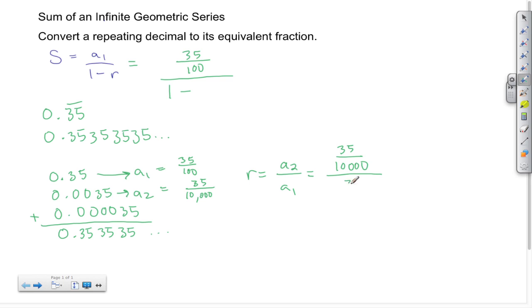...divided by a sub 1, which is 35 over 100. It's a complex fraction, which means I have to multiply by the reciprocal. So I take the denominator and I flip it, so here I have 100 over 35. And again, before I multiply these large numbers out, I can find common factors.